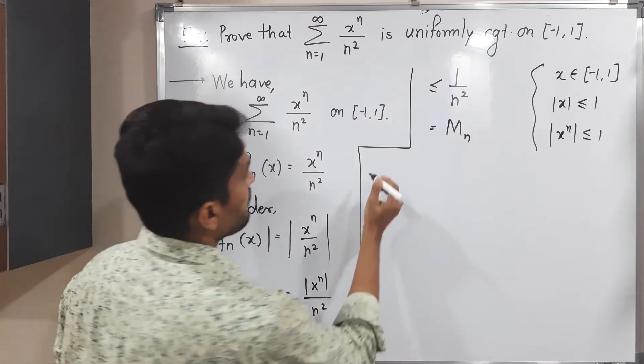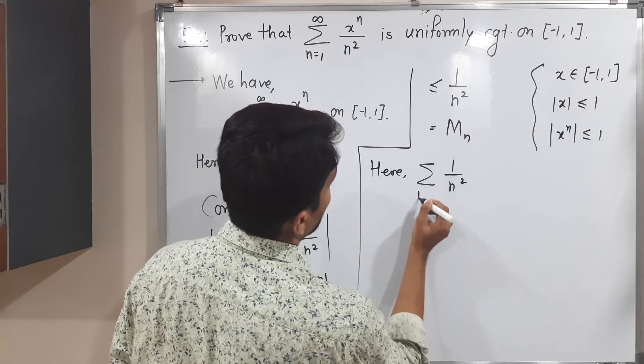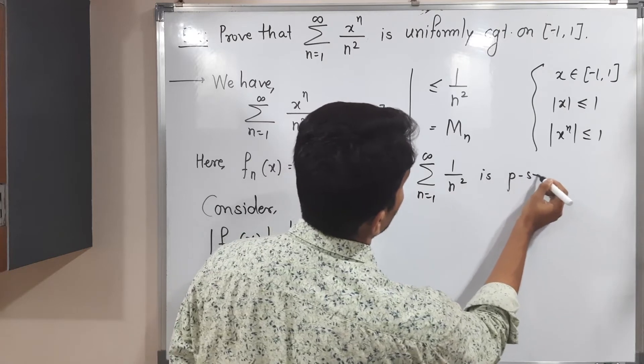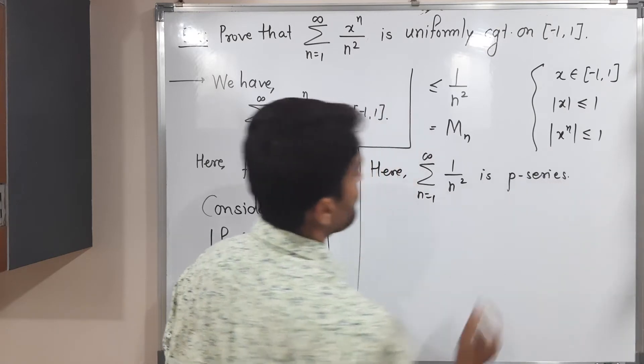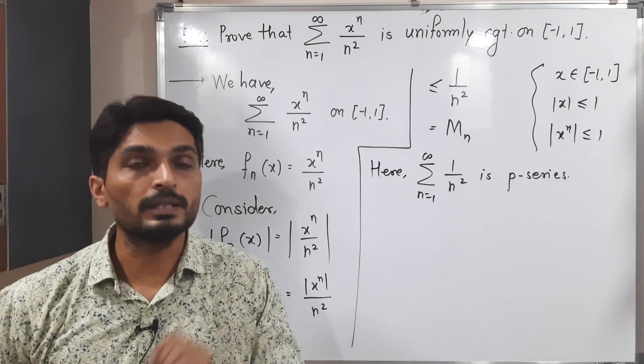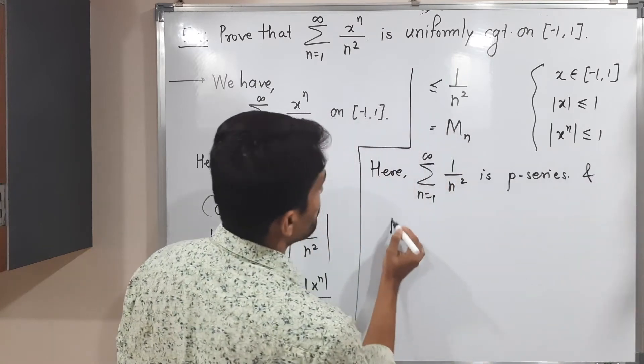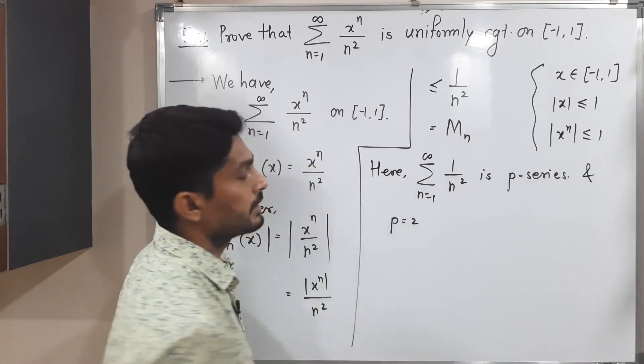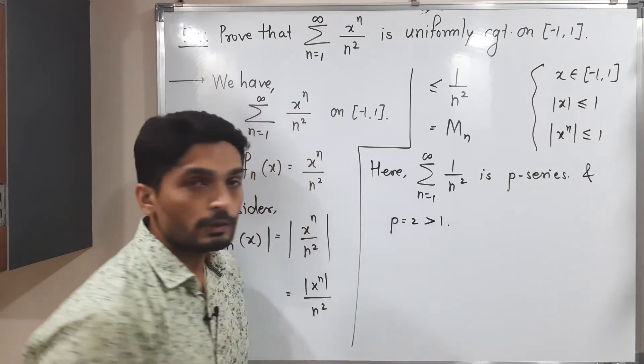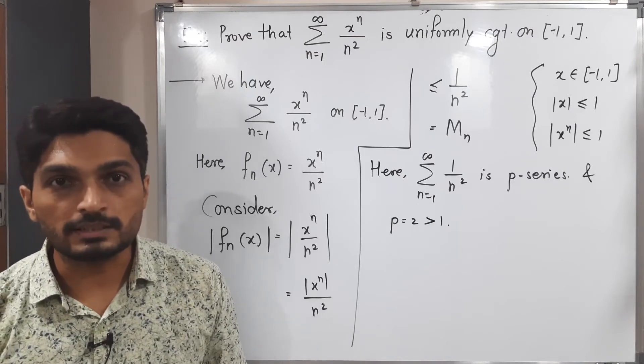Clearly here I can write summation one upon n raised to p, we call it as a p-series. Here value of p is 2 since power of n is 2. So p is 2 which is greater than 1. When we have a p-series where p is greater than 1, it is a convergent series.